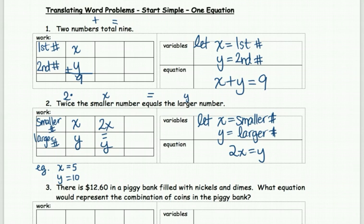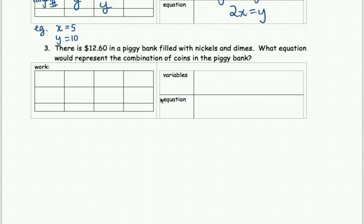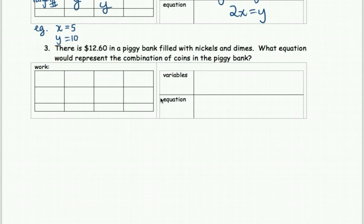Number three is more in line with what we're going to be doing today — working with money and building equations with things like the cost of tickets or how many coins we have. We'll keep it simple and start with just a one-equation type question. There's $12.60 in a piggy bank filled with nickels and dimes. What equation would represent the combination of coins in the piggy bank?